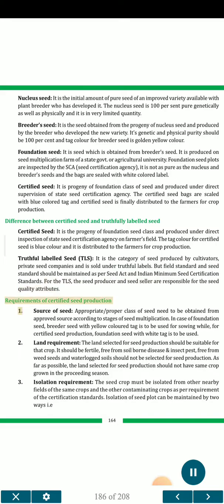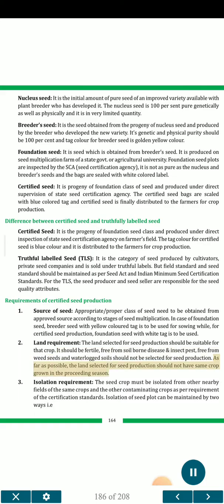Requirements of certified seed production: 1. Source of seed — appropriate class of seed needs to be obtained from an approved source according to the stages of seed multiplication. For foundation seed, breeder seed with yellow coloured tag is to be used, while for certified seed production, foundation seed with white tag is to be used. 2. Land requirement — the land selected for seed production should be suitable for that crop; it should be fertile, free from soil-borne diseases and insect pests, free from weed seeds, and waterlogged soils should not be selected. The land should not have the same crop grown in the preceding season.